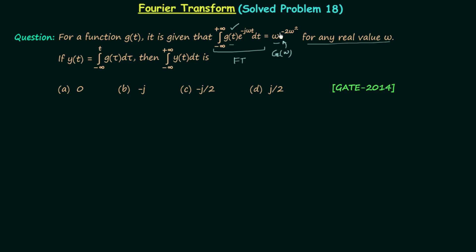If y(t) equals the integration from minus infinity to t of g(τ) dτ, then calculate the value of the integral from minus infinity to plus infinity of y(t) dt. There are 4 options and the question is taken from the GATE 2014 paper.